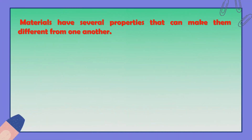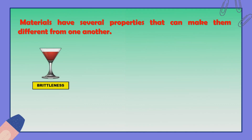Materials have several properties that can make them different from one another. Some types of properties can make them good materials for producing useful products, while others can cause harm. Let's discuss some of those properties. First, we have Brittleness — it is the property of a material to be easily broken into pieces when chopped or hit by a hard object. A wineglass is an example of a brittle material.